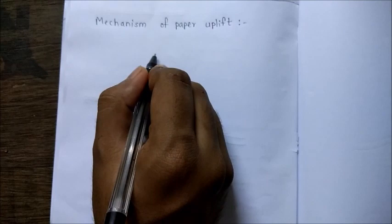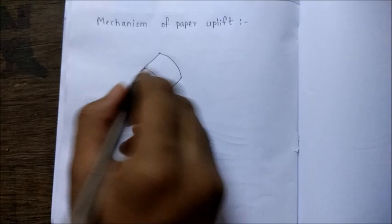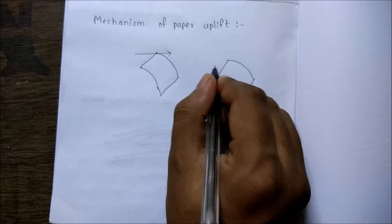Consider this as a paper. Now when we are blowing air in this direction, due to Coanda effect, the air gets bent over this surface like this. Now the air flowing in this direction causes a low pressure region over here.